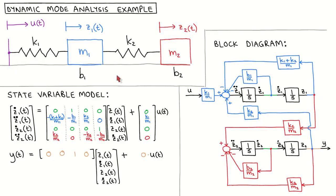Let's first recap the model derived previously. The system consists of two objects: a blue object with mass m1 and displacement from equilibrium z1, and a red object with mass m2 and displacement z2. The objects experience viscous friction with coefficients b1 and b2 respectively. There is a spring between the objects with spring constant k2, and a spring between the blue object and a movable connection with spring constant k1. We chose the states to be the displacement and velocity of both objects.